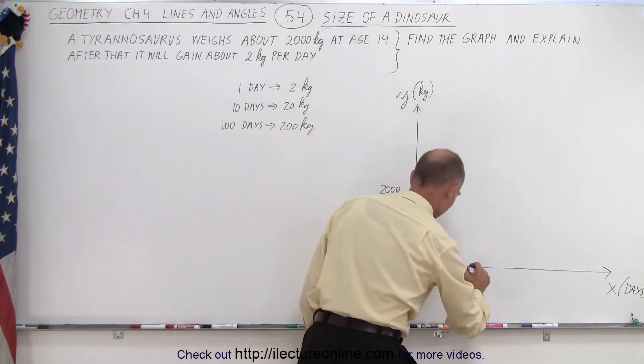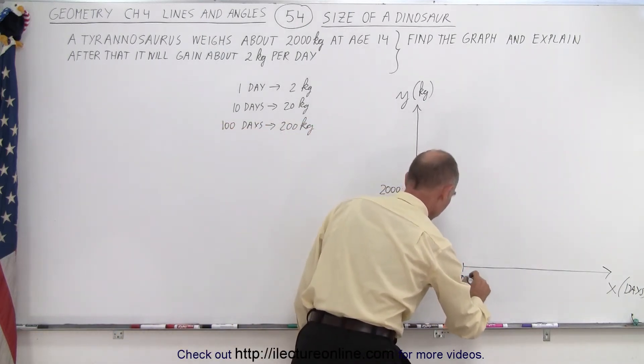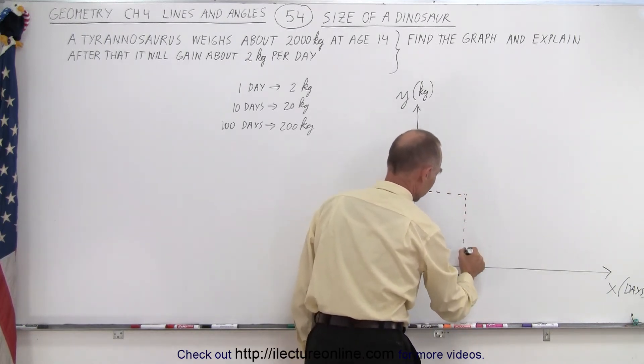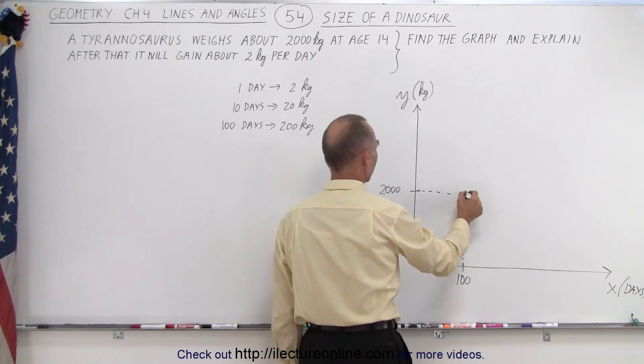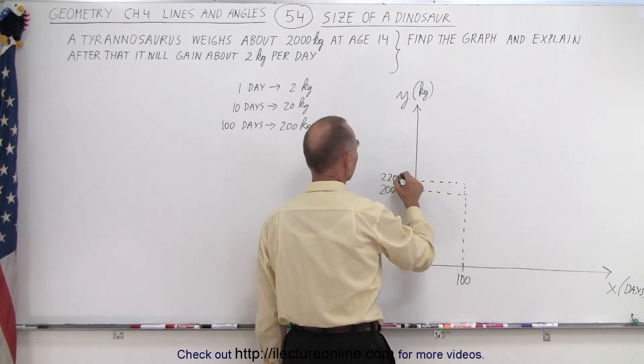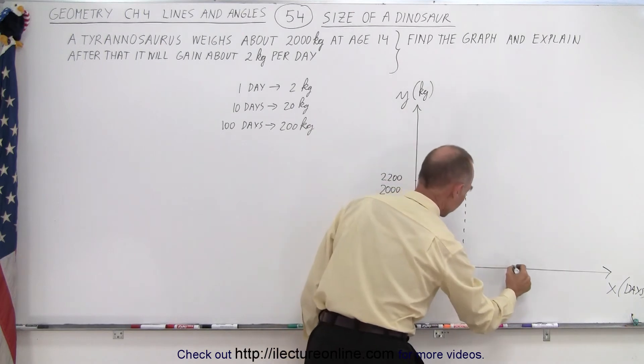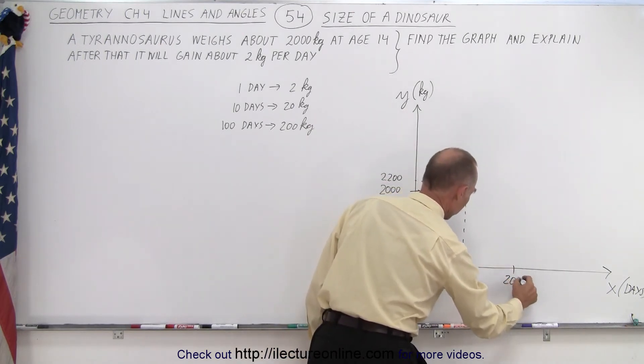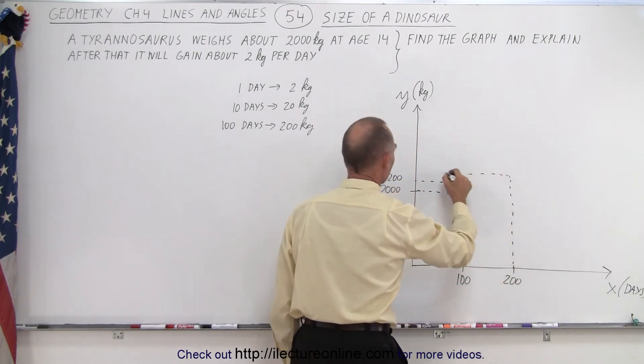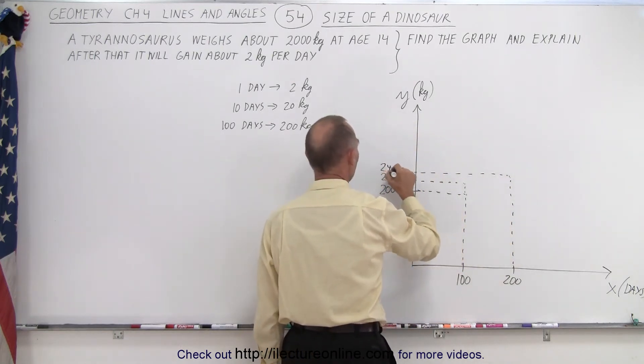So we can see that after 100 days, he will have gained an additional 200 kilograms. So now 200 more would be 2,200. And after 100 more days, now it's 200 days, he will gain another 200 kilograms more. So now his weight will be 2,400.